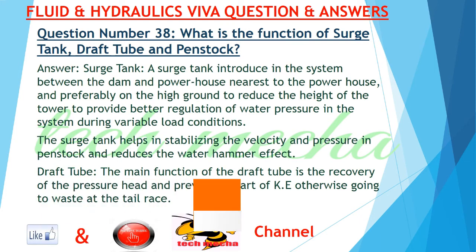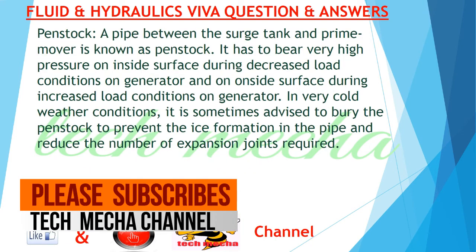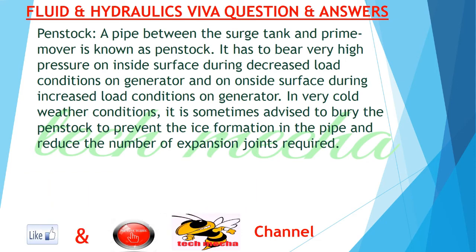Question number 38: What is the function of surge tank, draft tube, and penstock? Answer: Surge tank — a surge tank is introduced in the system between the dam and powerhouse, preferably on high ground, to reduce the height of the tower, to provide better regulation of water pressure in the system during variable load conditions. It helps in stabilizing velocity and pressure in the penstock and reduces water hammer effect. Draft tube — the main function of the draft tube is the recovery of the pressure head and prevention of kinetic energy loss at the tail race, and to prevent cavitation at the exit of the runner. Penstock — a pipe between the surge tank and prime mover is known as penstock. It bears very high pressure on its inside surface during decreased load conditions, and on its outside surface during increased load conditions. In cold weather, it is sometimes advised to bury the penstock to prevent ice formation and reduce the number of expansion joints required.